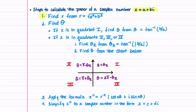Our first step is to find r from the formula r equals the square root of a squared plus b squared. Our second step is to find theta. If our complex number is in quadrant 1, then theta equals the inverse tan of b divided by a. If our complex number is in quadrants 2, 3, or 4, we do two steps: first find the reference angle, which equals the inverse tan of the absolute value of b divided by a, and then find theta from the chart.